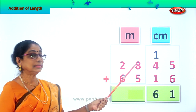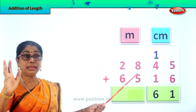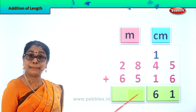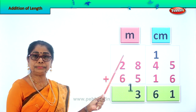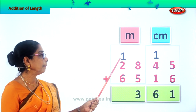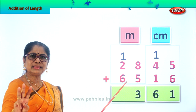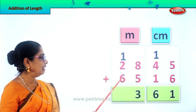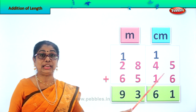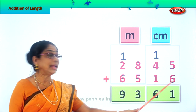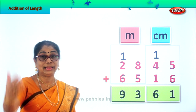Now let's add the meters. 8 plus 5 is 13. We leave the 3 here and carry the 1 ten over. Now let's add them all: 1 plus 2 is 3. 3 plus 6 is 9. So we write down 9 here. 28 meters 45 centimeters plus 65 meters and 16 centimeters is equal to 93 meters and 61 centimeters. That's your answer.